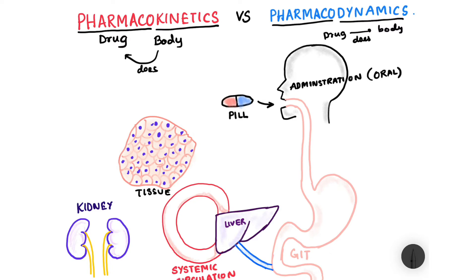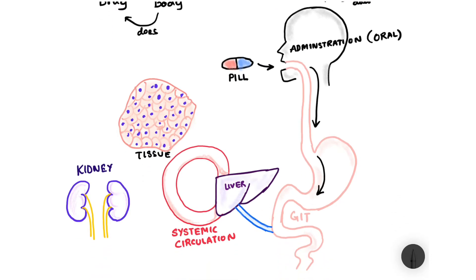After the drug is administered orally, it goes through the GI tract. It travels down and from the intestines, stomach, or different parts of the GIT, the drug gets absorbed into the portal circulation. It then goes to the liver, where it undergoes something known as first pass metabolism. In first pass metabolism, either the drug gets activated from its inactive form, or a fraction of the drug gets deactivated.